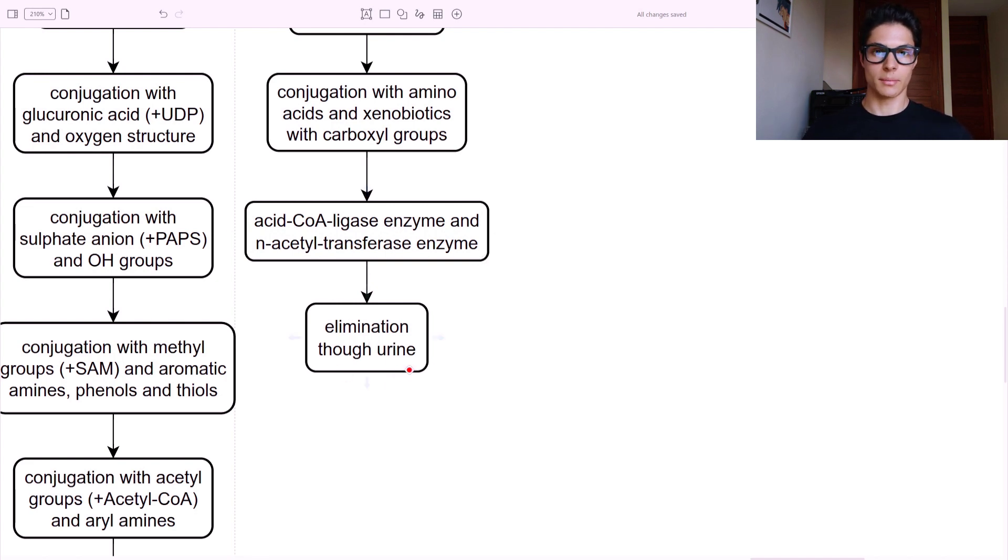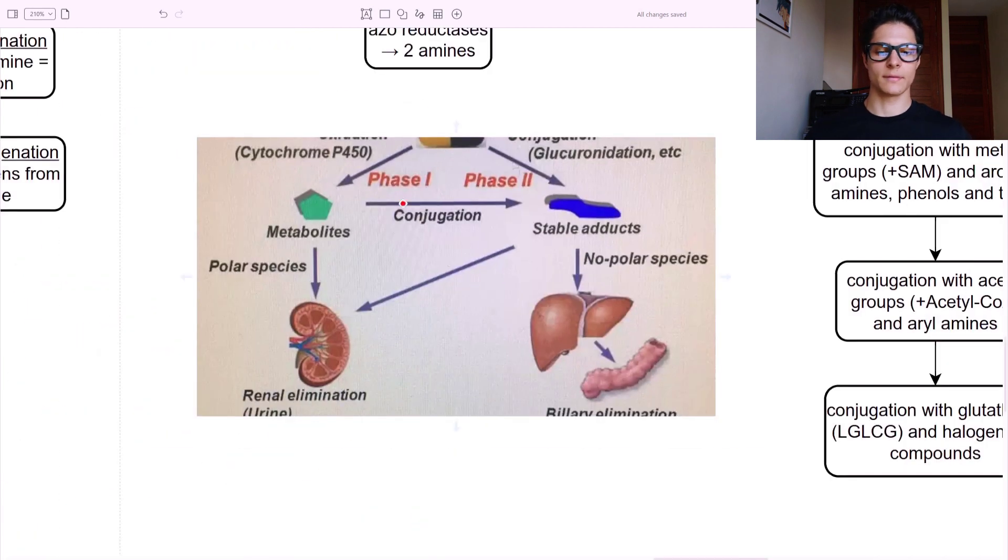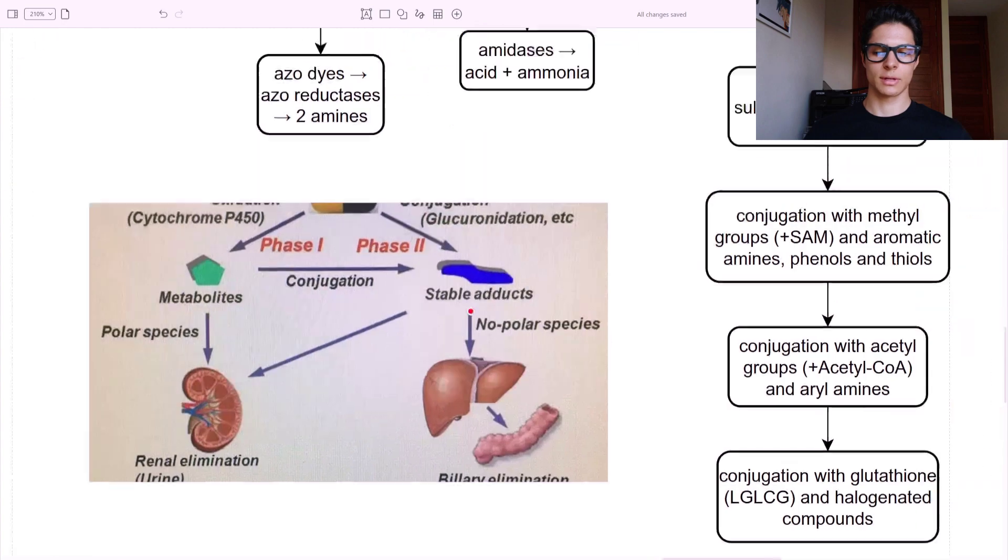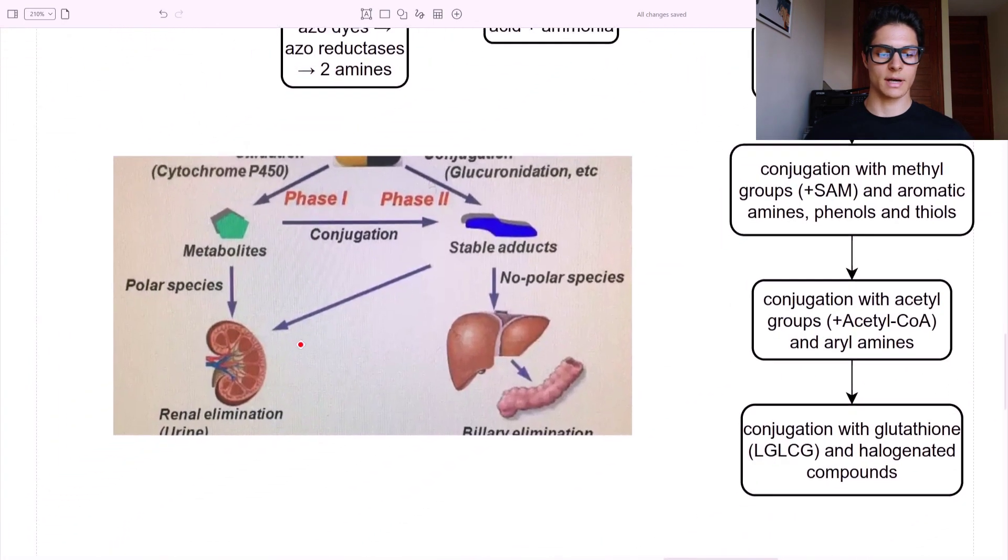The elimination is through the urine, mainly, using type two. Here, as you can see, we have phase one - metabolites, polar species, renal elimination. Phase two - stable adducts, non-polar species, biliary elimination. But some of those, the phase two reactions that are type two, so they activate the substrate, amino acids, they can go to the renal elimination as well. And the phase one reactions can also go to phase two reactions via conjugation.